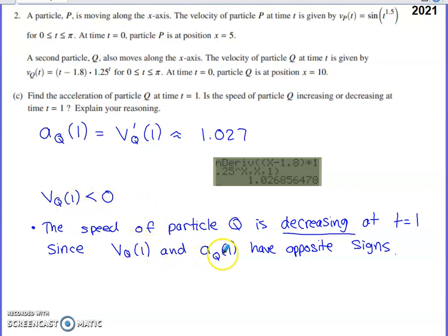If velocity and acceleration have opposite signs, that tells you that your speed is decreasing any time that happens. And that's the exact line that needs to get onto your page in order to receive that explain your reasoning point. But that would be what you need to get on your page in order to get that explain your reasoning point. They have opposite signs, therefore decreasing. If these would have had the same sign, then we would have had increasing speed.